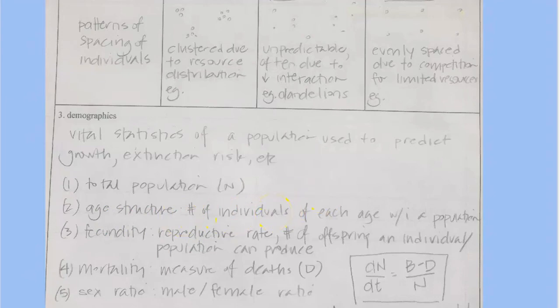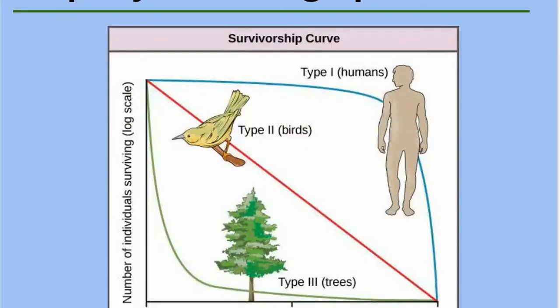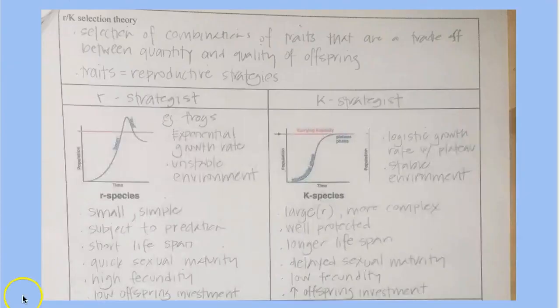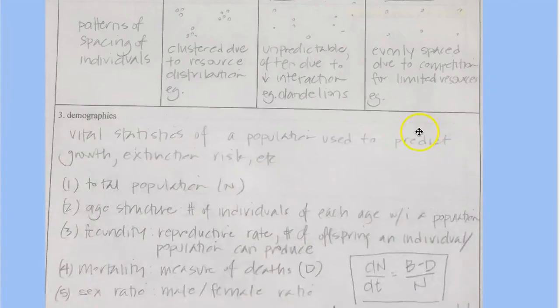So a population is maybe really old or really young. And you can get these curves that show how old organisms are in a particular population, survivorship curves and things like that.